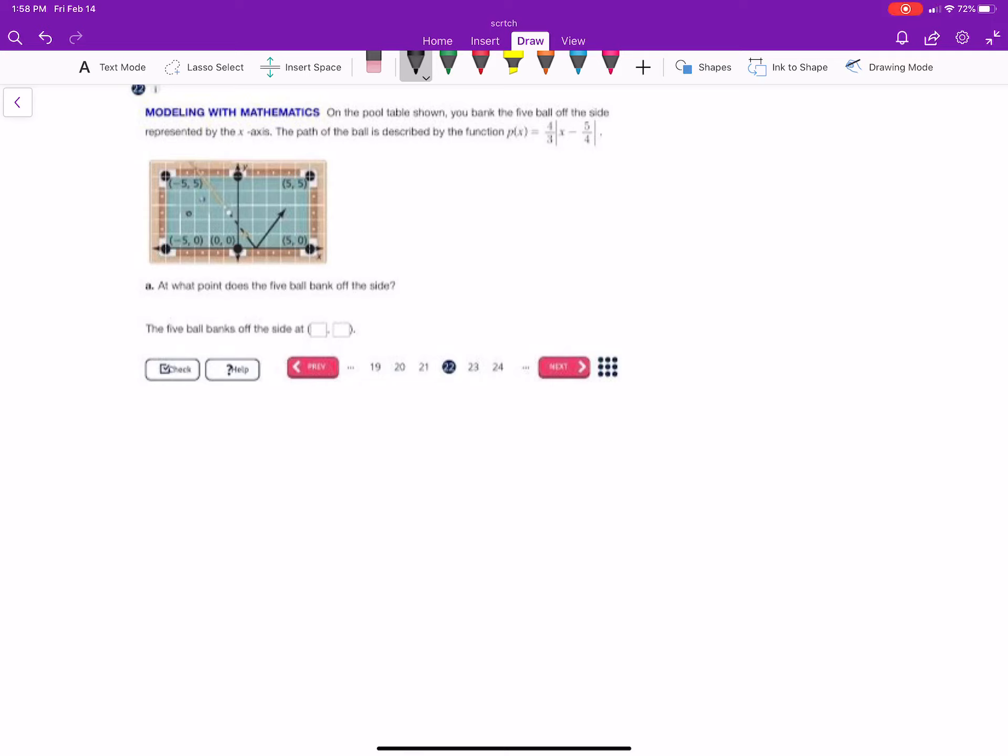All right, so we're going to continue with the theme here, working with graph transformations. This is another kind of word problem set up. On the pool table shown, you bank the 5-ball off the side, represented by the x-axis. Not too clear to see, but this is the x-axis.